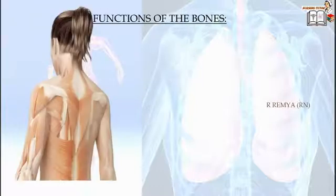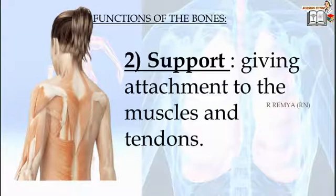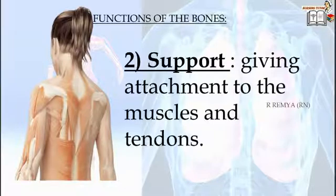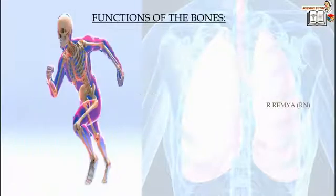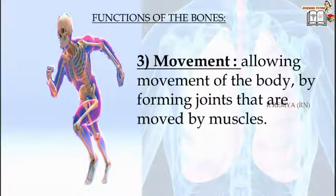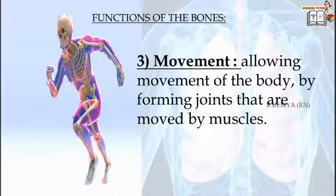The second function is support — bones provide attachment to the muscles and tendons. The next function is movement. Working with skeletal muscles, tendons, ligaments, and joints, the bones form the moving machinery of the human body. The major role of bones in movement is that they act as levers, making use of the forces generated by skeletal muscles in a beneficial way.